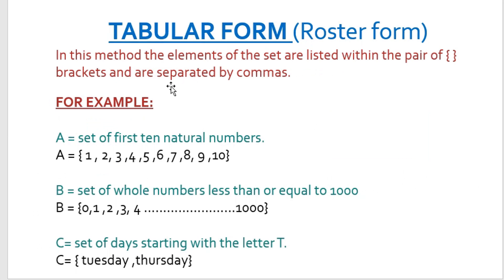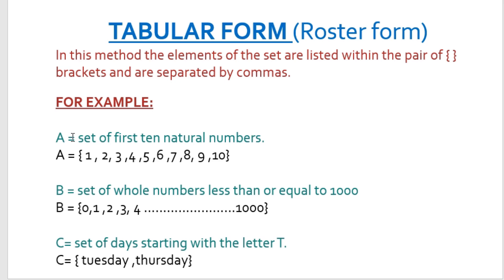The second form we will discuss now is the tabular form, also known as the roster form. In this method, the elements of the set are listed within a pair of curly brackets and are separated by commas. So when we write a set in tabular form, we list the elements in curly brackets and separate the elements by commas.